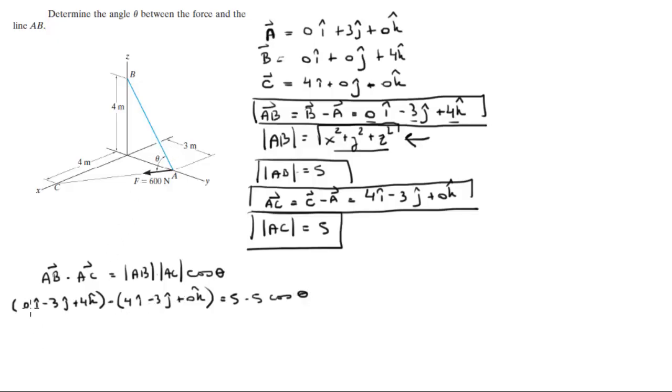0 times 4 is 0, negative 3 times negative 3 is positive 9, 4 times 0 is 0, is equal to 5 times 5 is 25, cosine of theta.